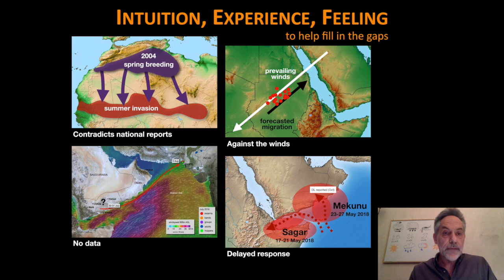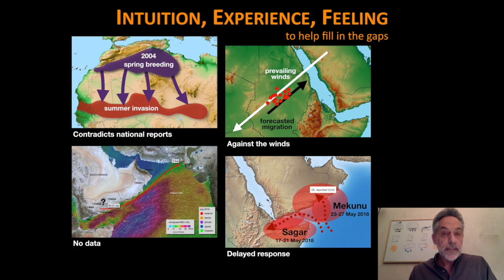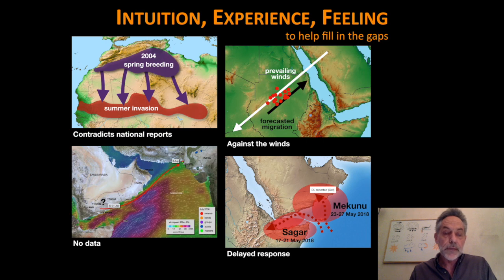The first example is from 2004, when there was very heavy spring breeding in Northwest Africa. Very intensive ground and aerial control operations were being undertaken by those countries, who reported they were making very good progress at stopping any further migration. However, I was forecasting at the same time that there would indeed be a migration from untreated or undetected areas to the northern Sahel for the summer — contradicting the national reports we were receiving. And indeed, there was an invasion of the Sahel in the summertime.